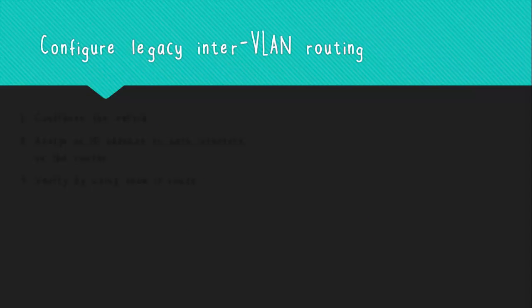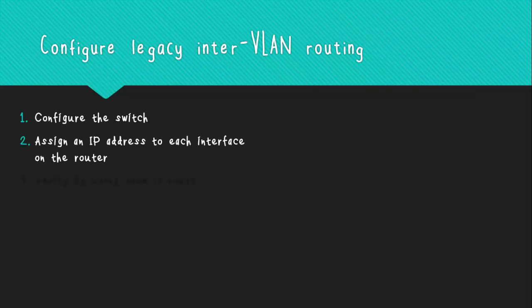To configure legacy InterVLAN routing, it is necessary that the switch to which the router is connected is properly configured, which means all the VLANs are created and all the ports are assigned to the corresponding VLAN. Once the switch is configured, each router interface must be assigned an IP address by entering the interface using the command 'interface' followed by the interface ID, then issuing 'ip address' followed by the IP address and the subnet mask.